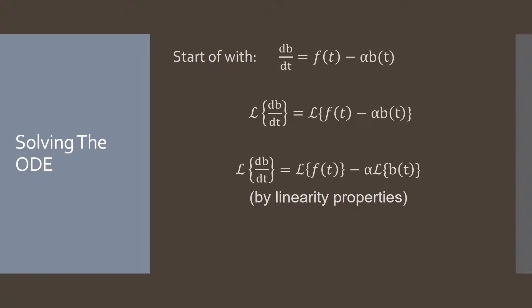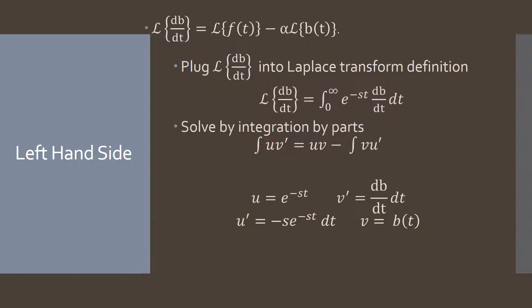To start, we look back at the equation and take the Laplace transform of both sides. On the right-hand side, by linearity properties of the Laplace transform, we can take the Laplace transform of just F(t) and just B(t) separately, and also pull out that alpha on the B(t) term. Now let's look at the left-hand side — I'll show how we use the Laplace transform to solve it, and then from here on we'll use the table to make things quicker.